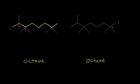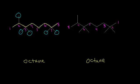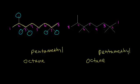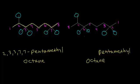Let's number all carbons both ways. Numbering from the left, the five methyl groups are on carbons 2, 3, 3, 7, 7 — giving 2,3,3,7,7-pentamethyloctane. Numbering from the right, the methyl groups are on carbons 2, 2, 6, 6, 7 — giving 2,2,6,6,7-pentamethyloctane.